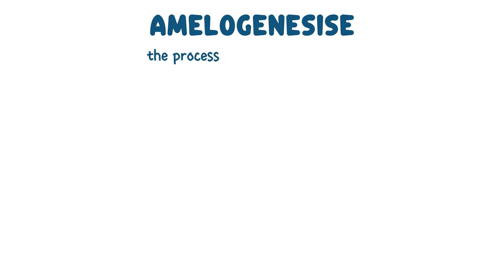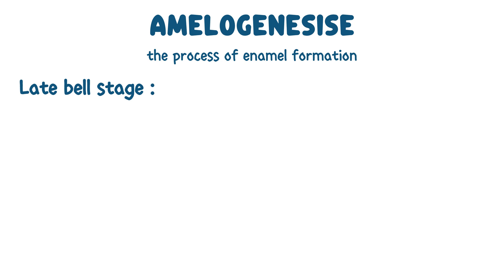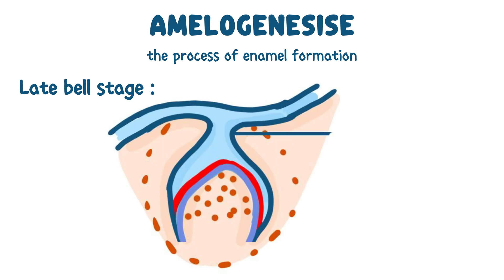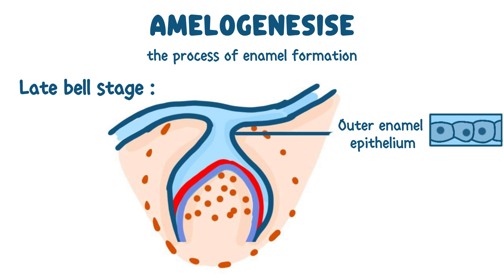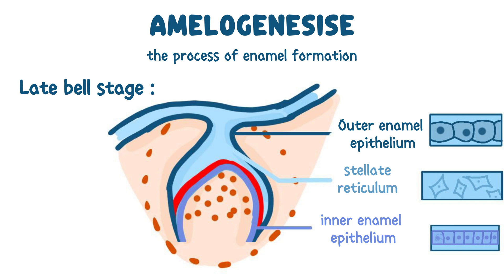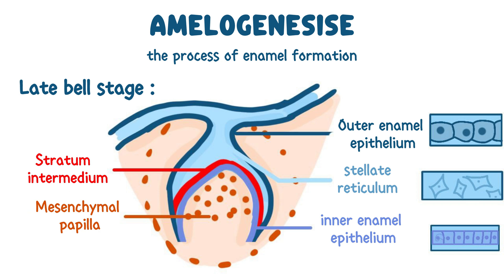Amelogenesis is the process of enamel formation. It begins during the late bell stage of tooth development, when the dental germ consists of outer enamel epithelium and inner enamel epithelium, separated by the stellate reticulum, stratum intermedium located adjacent to the inner enamel epithelium, follicular sac which surrounds the developing tooth, mesenchymal papilla, which later gives rise to the dental pulp and odontoblasts, Hertwig's epithelial root sheath, which will contribute to root formation.